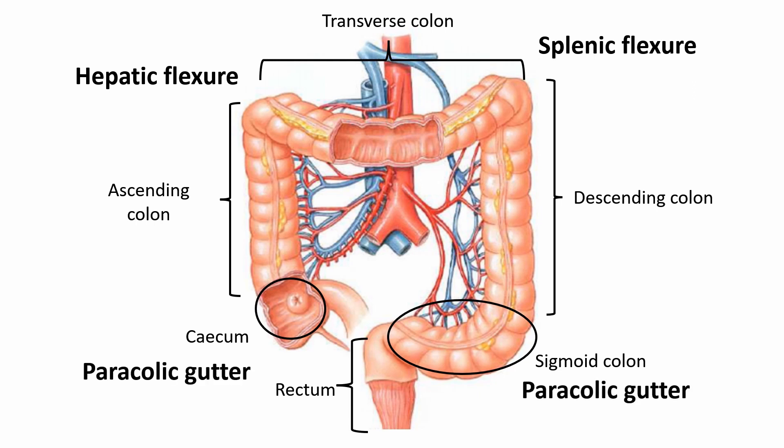The paracolic gutters are on either side of the ascending and descending colon and the posterolateral abdominal wall. These structures are clinically important as they allow fecal material released from inflamed or infected organs to accumulate in these sites and prevent it from spreading elsewhere in the abdomen. This is clinically important in appendicitis and burst appendix surgery.